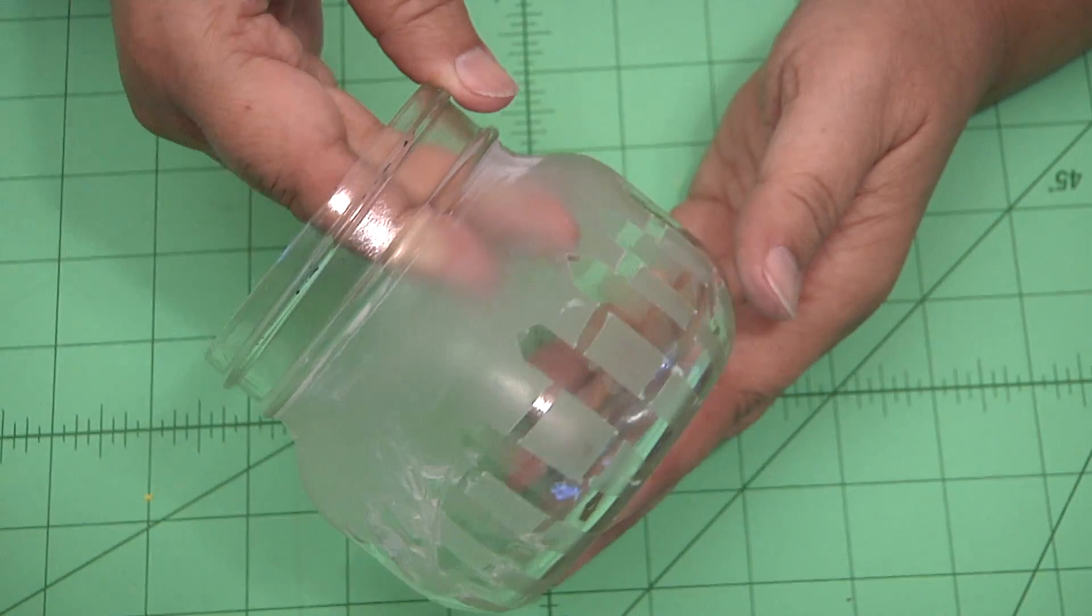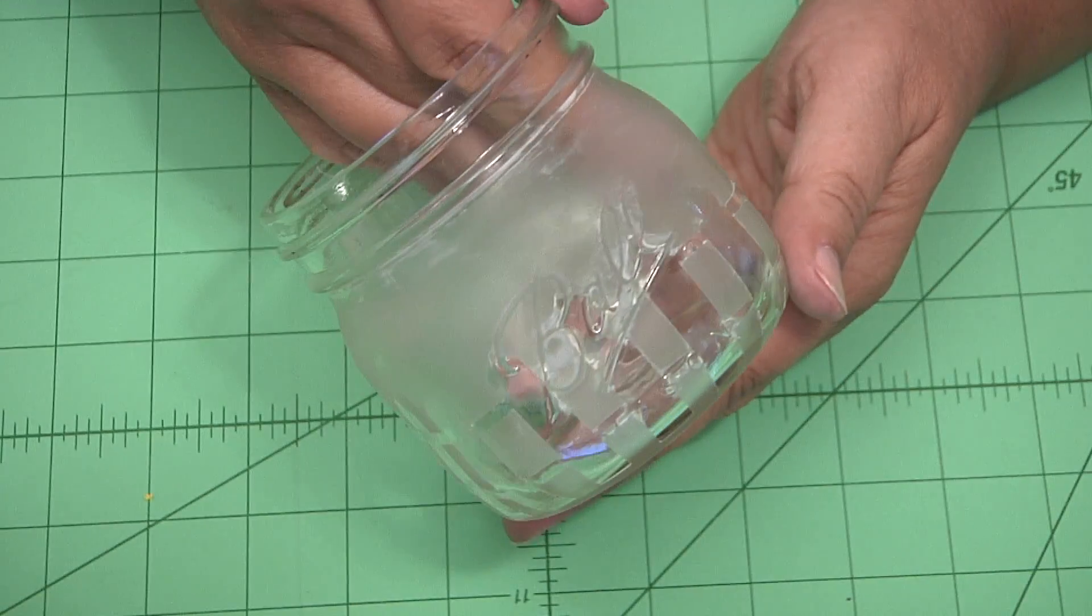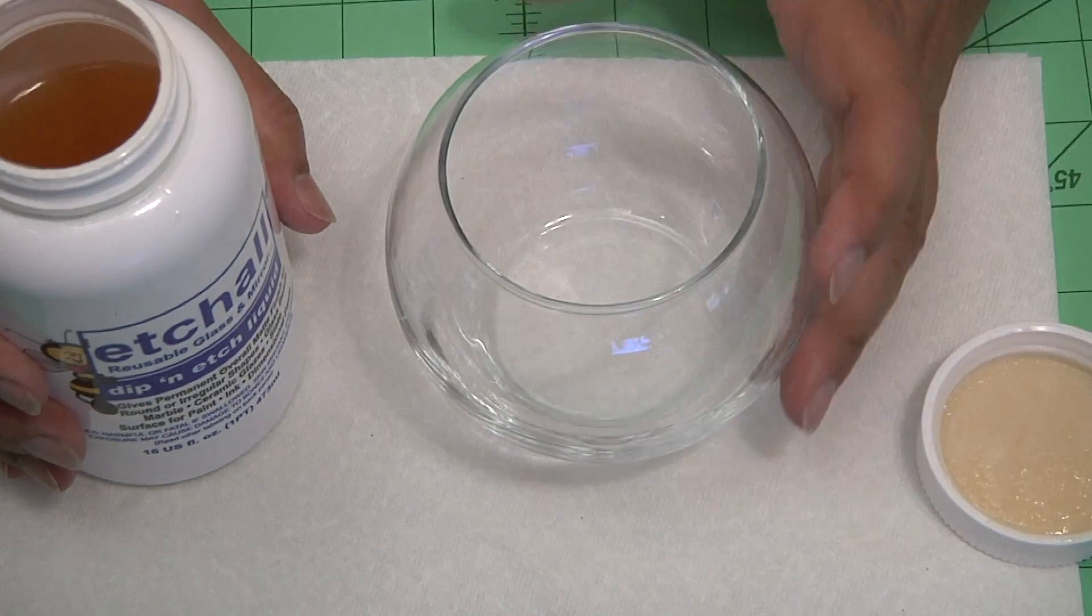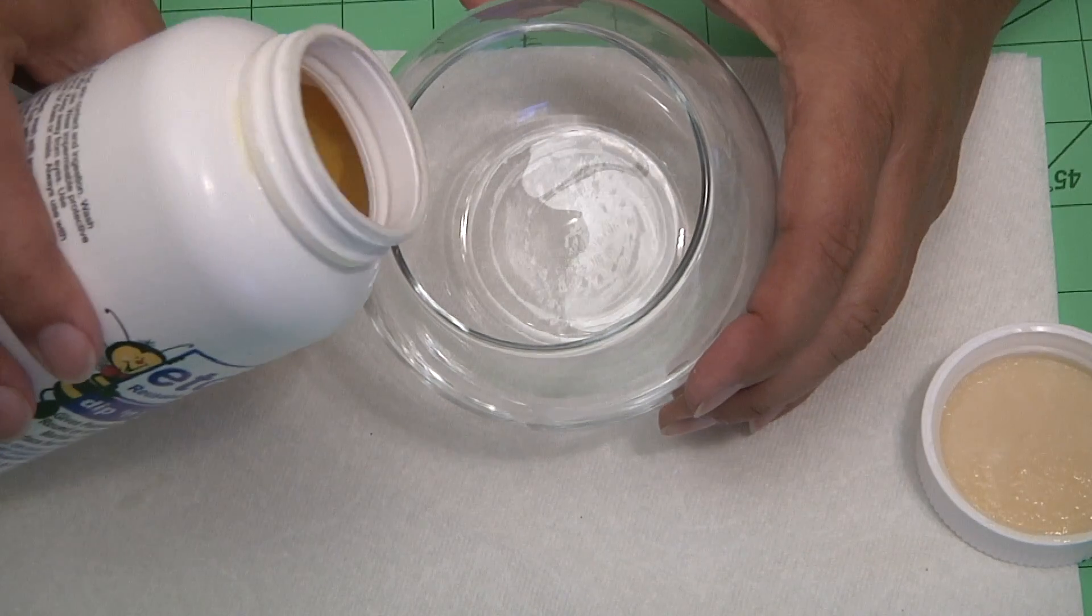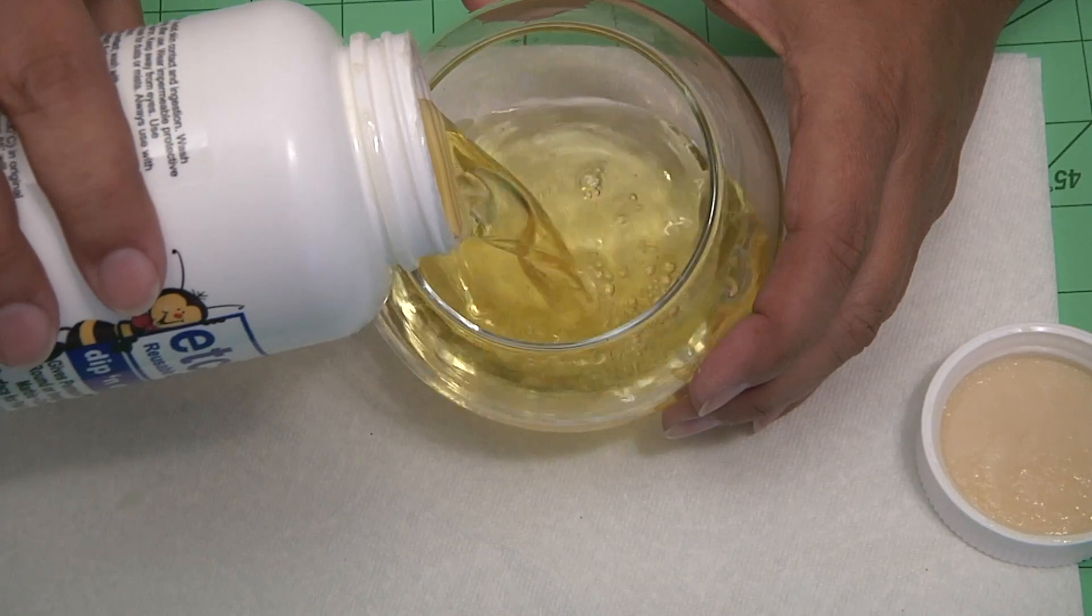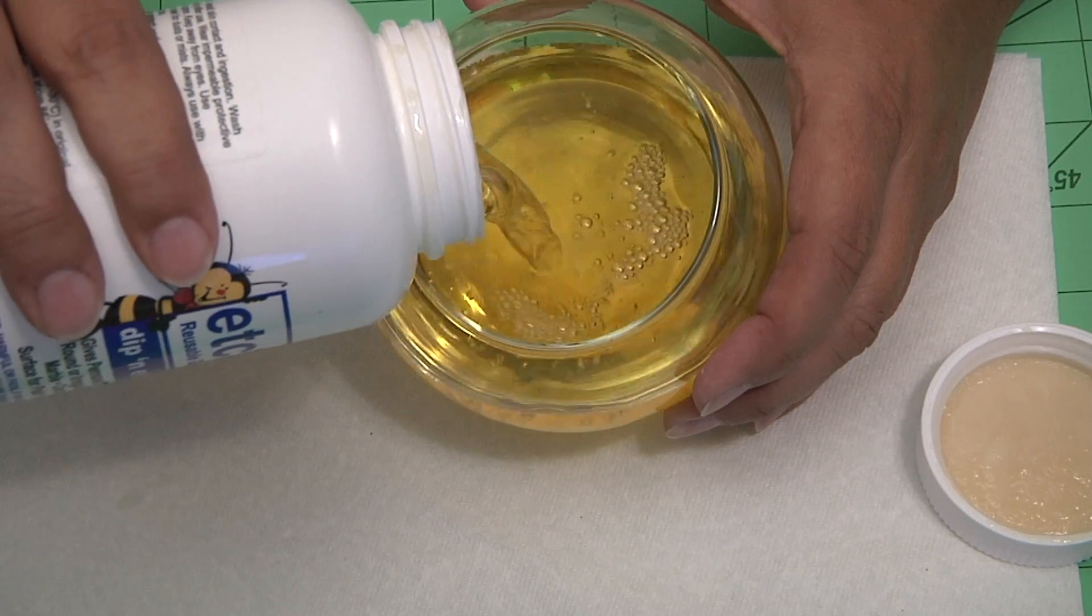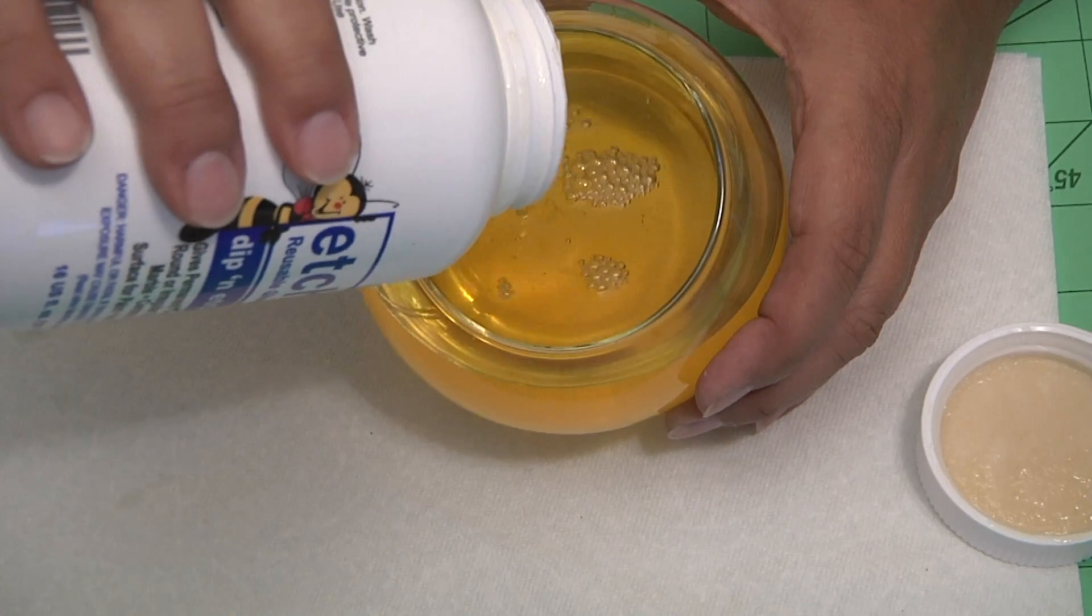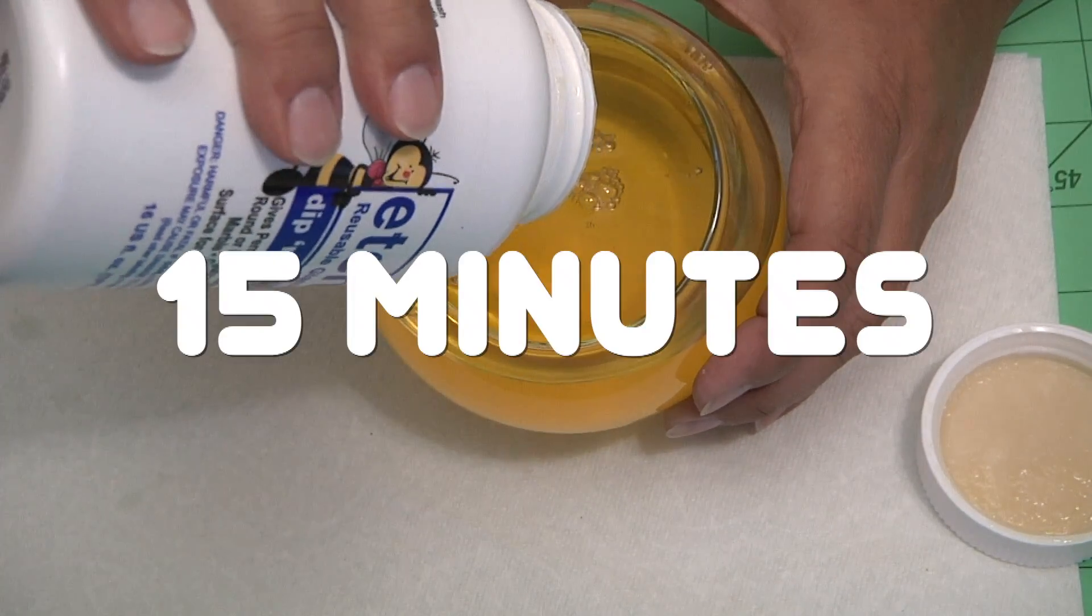And once it's all done, look how amazing. It looks just like a fence. For our next step, we're going to pour the dip and etch inside the little round bowl. This is a little odd because you'd think you'd be doing it on the outside, but there's a reason for my madness today. Pour all the dip and etch inside and let that sit for 15 minutes.